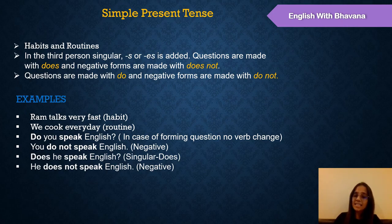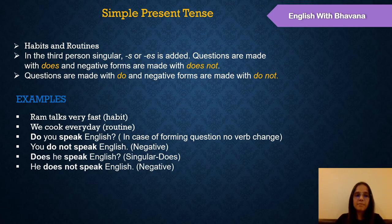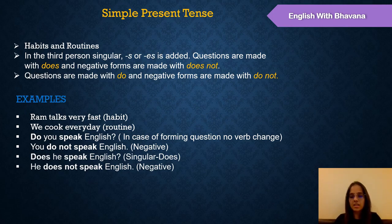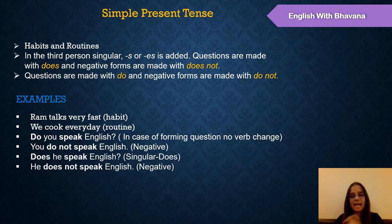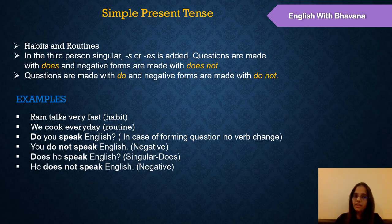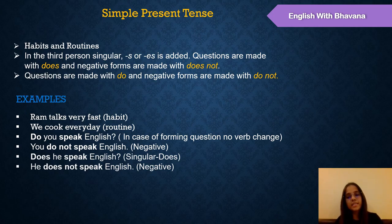Simple present tense is used in the following cases: for habits and routines. For example, 'Your school starts every day at 7am' — it's a routine. In the third person singular, you add 's' or 'es'. For example, the verb 'study' turns to 'studies' in simple present tense. Questions are made with 'do' or 'does', and negative forms are made with 'does not'. For example, 'Ram talks very fast' — 'talks' has an 's', so it is simple present tense, and it's a habit.